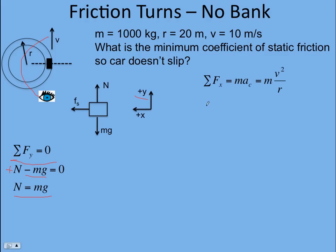In the x direction, the sum of the forces equals mass times acceleration, but in this case the acceleration is centripetal acceleration, equal to v² over r for uniform circular motion. We substitute v² over r for the acceleration, and the only force in the x direction is static friction, entirely in the positive x direction, so the sum of the forces in x becomes the force of static friction.